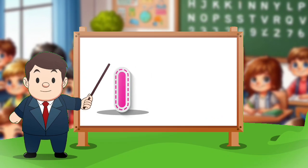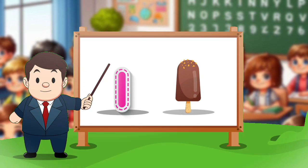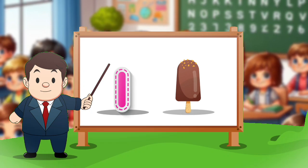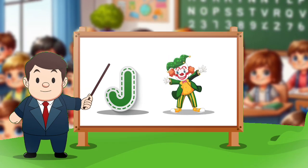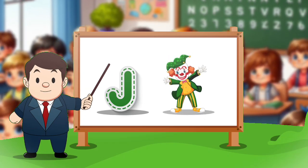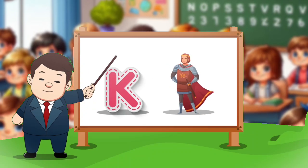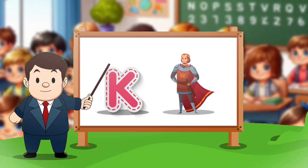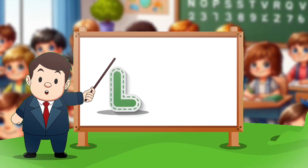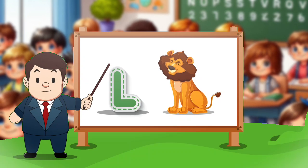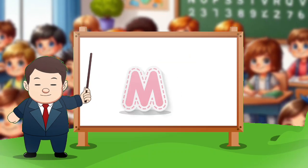I. I for ice cream. J. J for joker. K. K for king. L. L for lion.